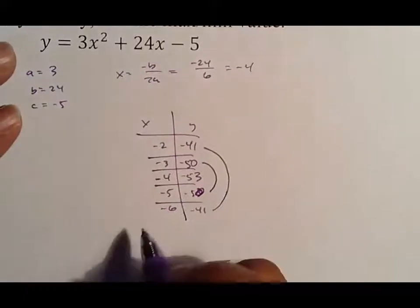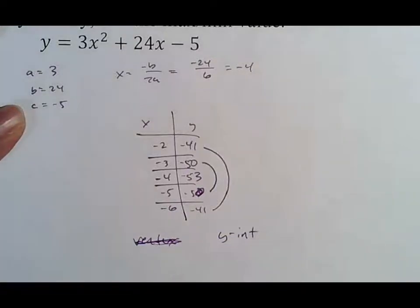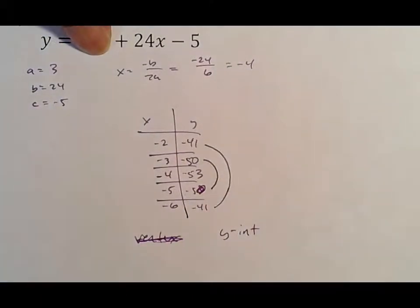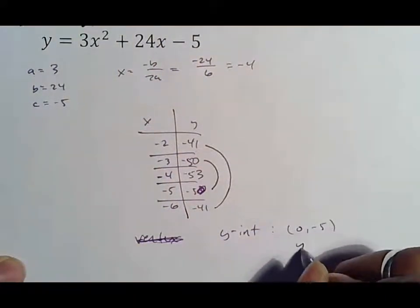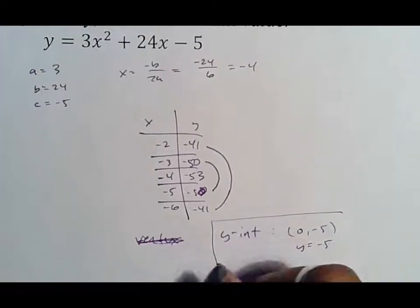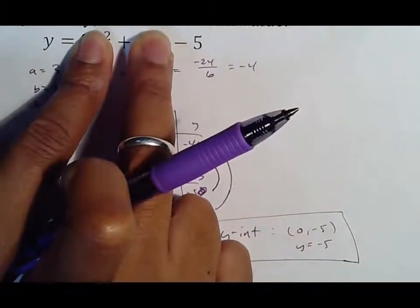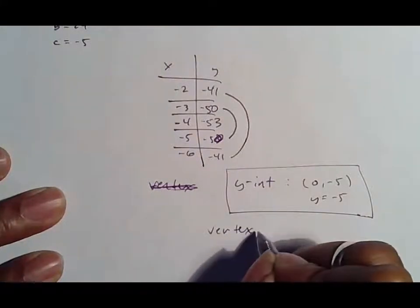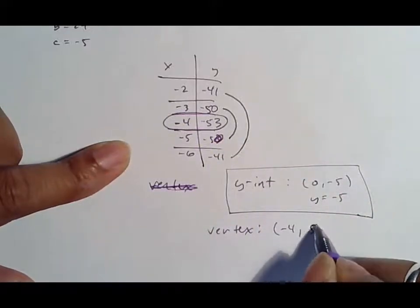You want the y-intercept first. Y-intercept means ignore X — take the X terms away and look at what's left over. Some people want you to put (0, negative 5), some want y equals negative 5. That negative 5 is your number. Your vertex, once you have all this, is also not hard to find. Your vertex is the center of your table, which is negative 4, comma, negative 53.